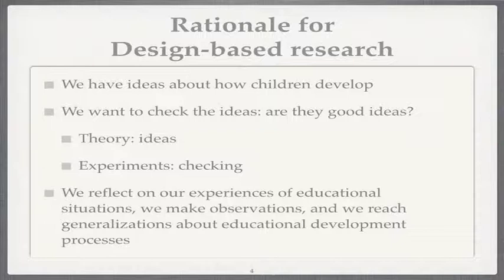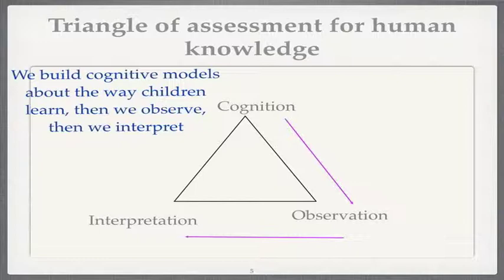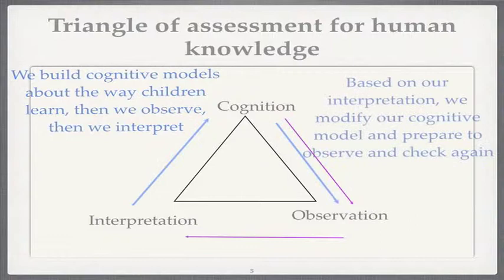So we have ideas about how children develop. We want to check the ideas — are they good ideas? Do they have traction? We have experiments that we do to check. We reflect on our experiences of educational situations, set up our own observations, and reach generalizations. We build cognitive models about the way children learn — representations. Then we interpret. First we have the model, then we observe, then we interpret. Based on our interpretation, we modify our cognitive models and prepare to observe and check again. Starting to look like a cyclical process.